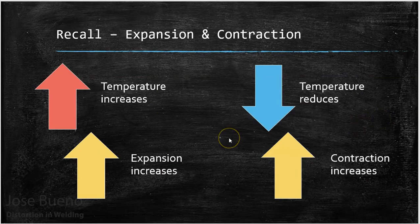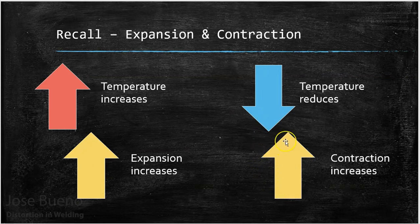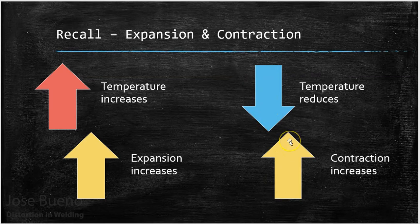As a quick reminder: as the temperature of the part increases, it's going to expand more. As that temperature reduces, contraction is going to increase. More heat equals more expansion, and with more heat, there's more room for temperature to decrease, which leads to more contraction.